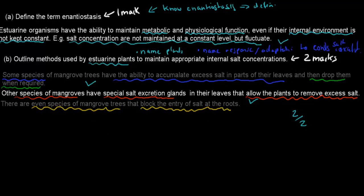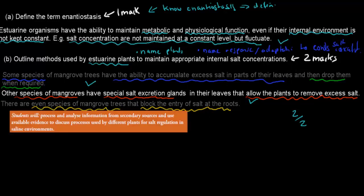Where do these come from? They come from this dot point. The lower one: process and analyze information from secondary sources and use available evidence to discuss processes used by different plants for salt regulation in saline environments. Remember, saline was just salty. This is exactly what B was asking us to do. And A, the defined enantiostasis dot point, which just means we have to define what enantiostasis was.